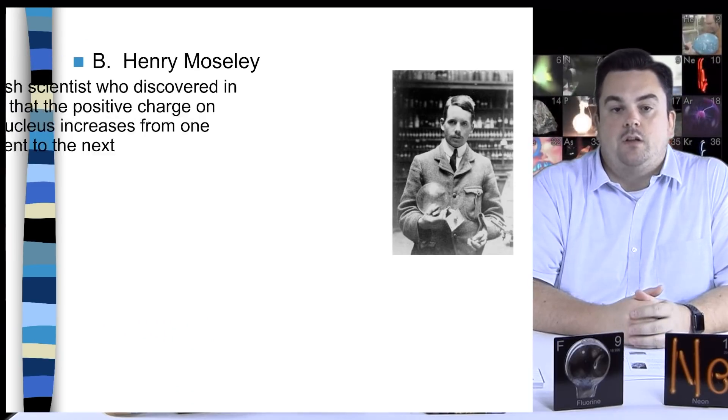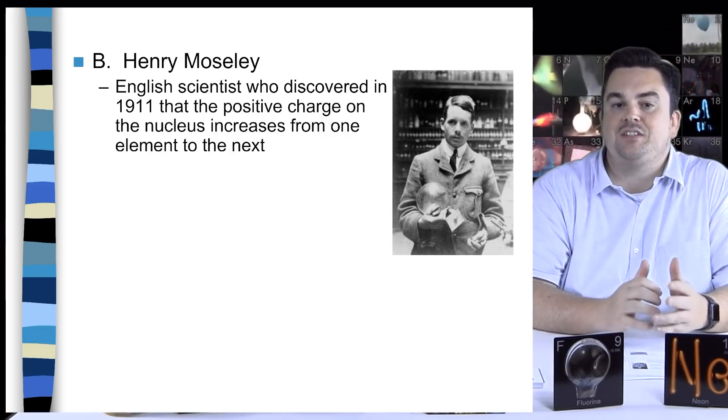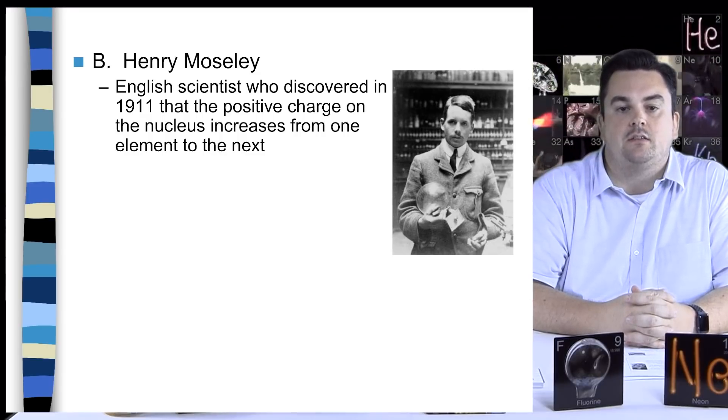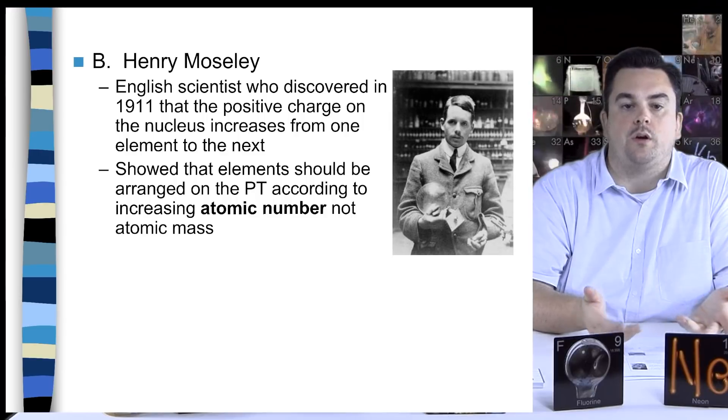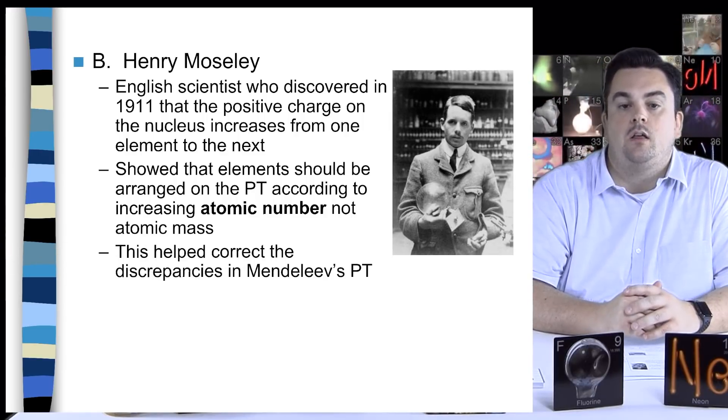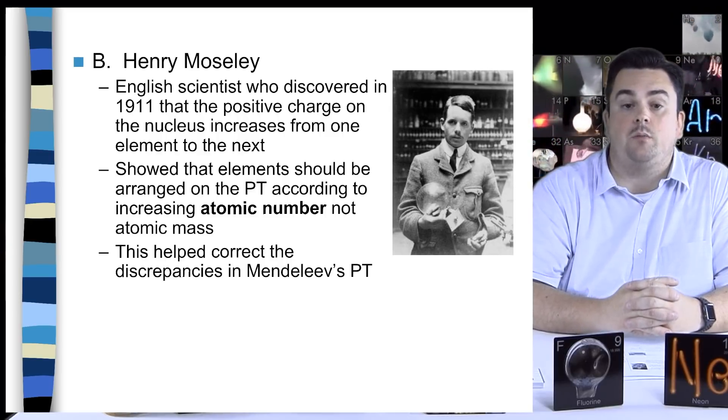Henry Moseley was an English scientist who discovered in 1911 that the positive charge on the nucleus increases from one element to the next. He showed that elements should be arranged on the periodic table according to increasing atomic number, not atomic mass. This helped correct the discrepancies in Mendeleev's periodic table.